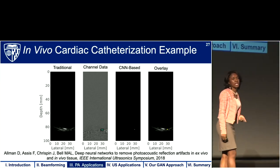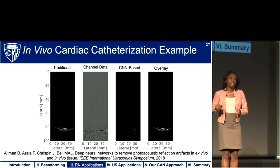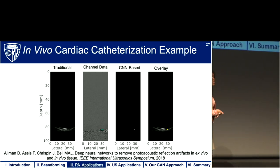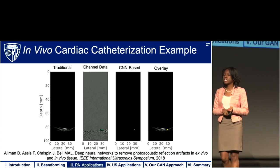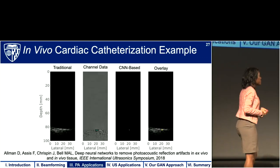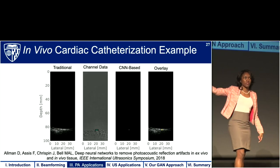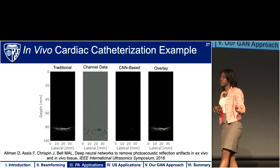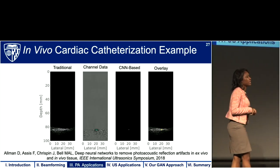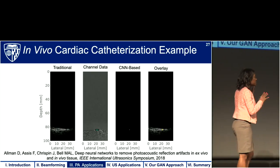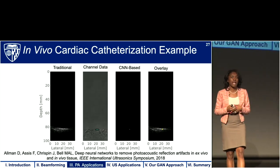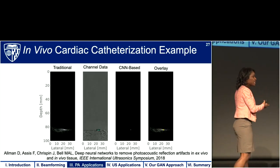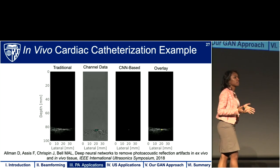The in vivo example — not included during training — involves navigating a cardiac catheter toward the heart with an optical fiber inserted into it, illuminating the catheter tip. With traditional beamforming methods at such deep depth, the resolution is very poor. Our goal is to return to the channel data and pass it through our network to determine exactly where the catheter tip is located, and then overlay the CNN-based image on the traditional image to show its exact location in the photoacoustic image. These initial results are what led us to explore applying similar approaches to ultrasound data.